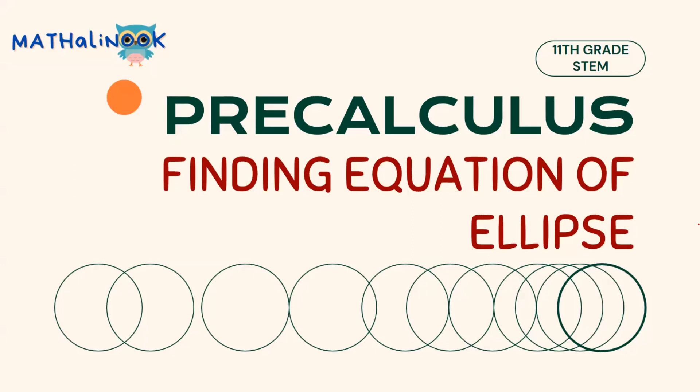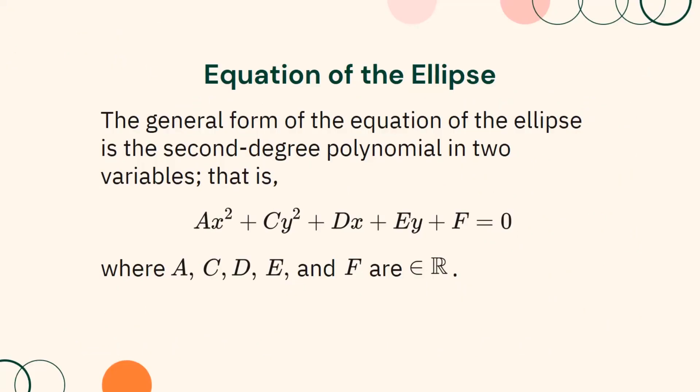Good day, everyone. In this video, we will discuss about finding the equation of an ellipse. We have discussed that the general form of an equation of an ellipse is a second-degree polynomial in two variables, that is, ax² plus cy² plus dx plus ey plus f equals 0,